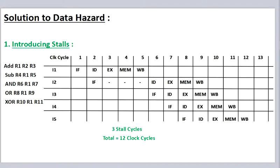Now the first solution to data hazard is introducing stalls. Suppose we have the following instruction set. The hazard here is because the r1 value in instructions i2, i3, and i4 is unupdated. So to remove this hazard we shift the ID stage after the write back stage of instruction 1. Hence there will be 3 stall cycles and the total number of clock cycles will be 12.